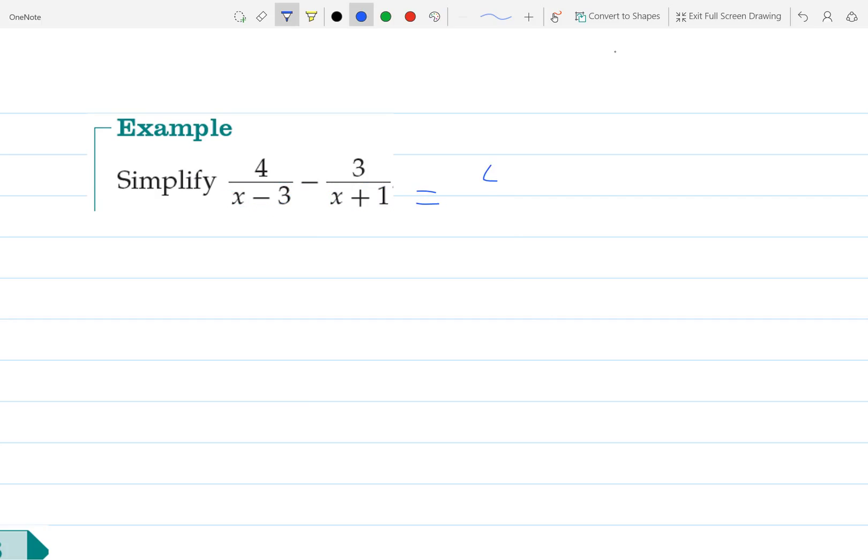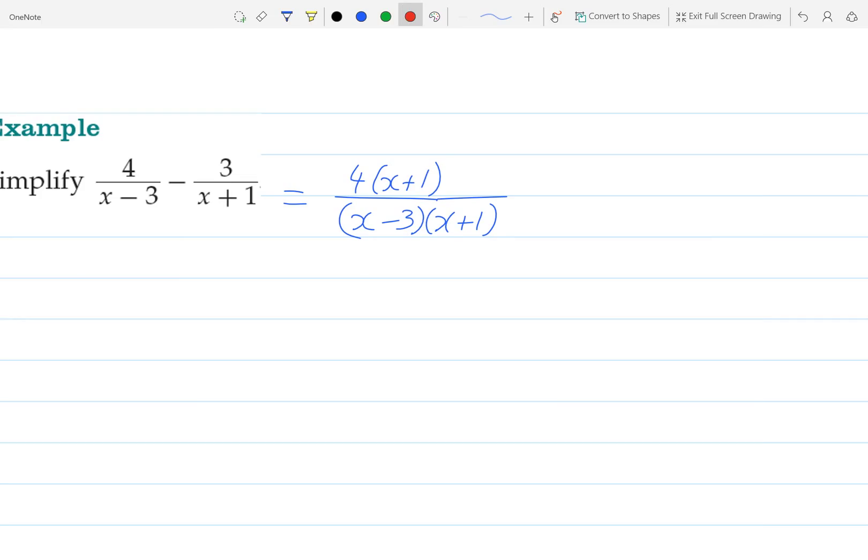So that would mean we have 4 times (x+1) over (x-3) times (x+1). What I've done there is I've simply multiplied that fraction by (x+1) over (x+1).